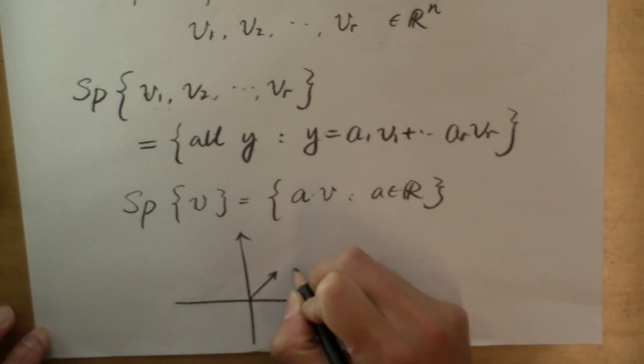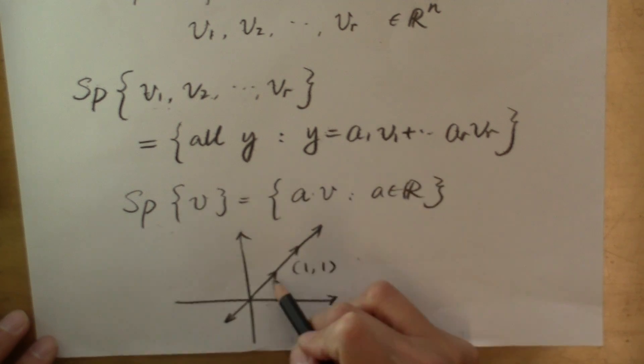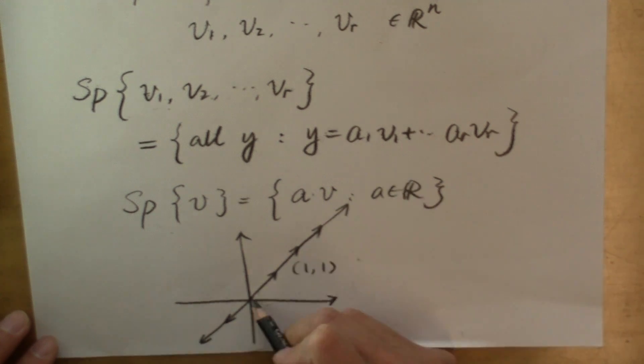For example, if v is the vector [1,0], then the span of this set containing only v is going to be that line up on the same line as v, but has either the same or the opposite direction and has different lengths.